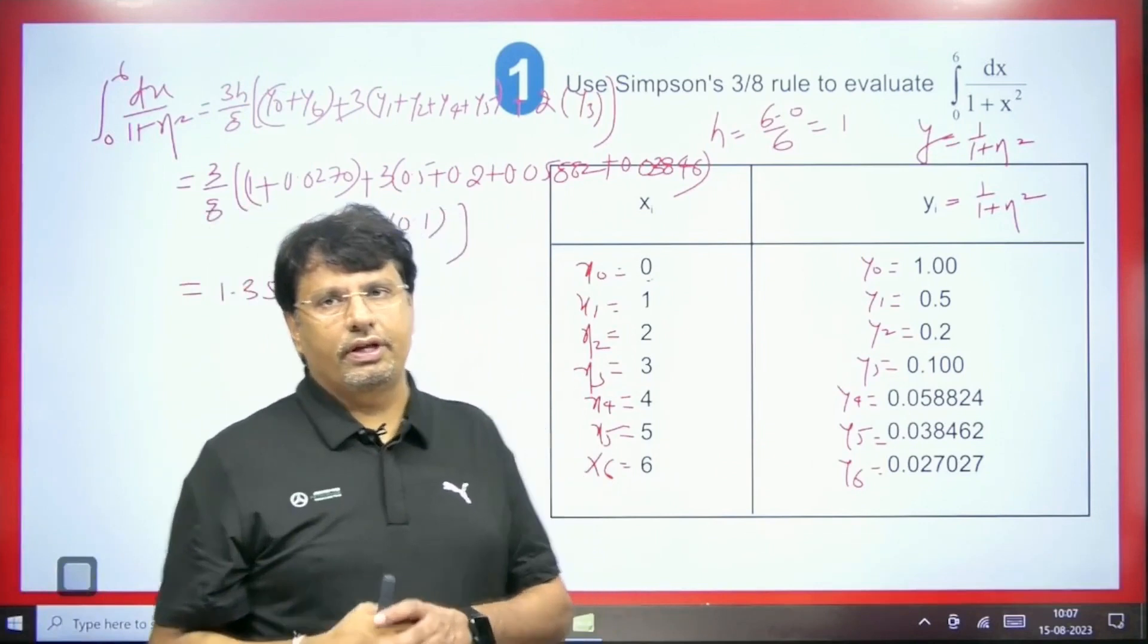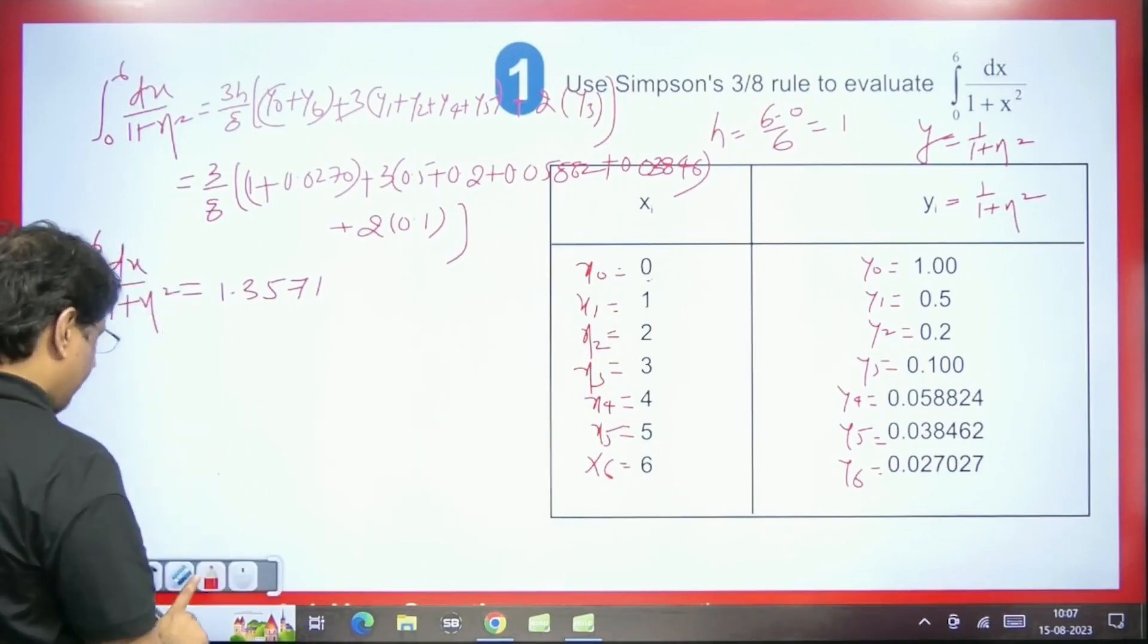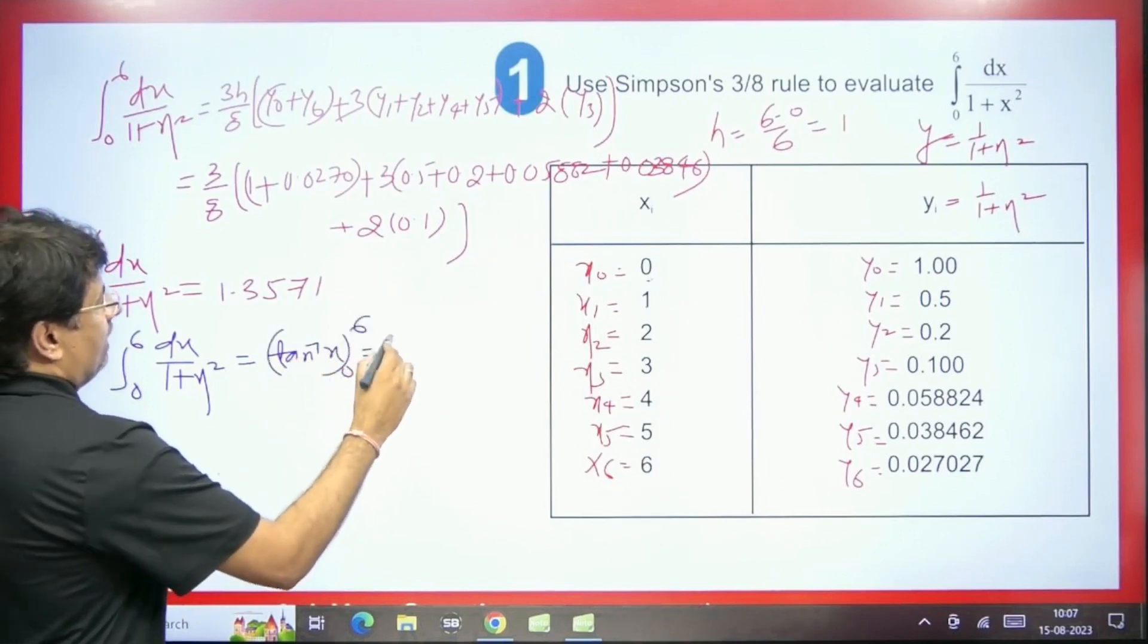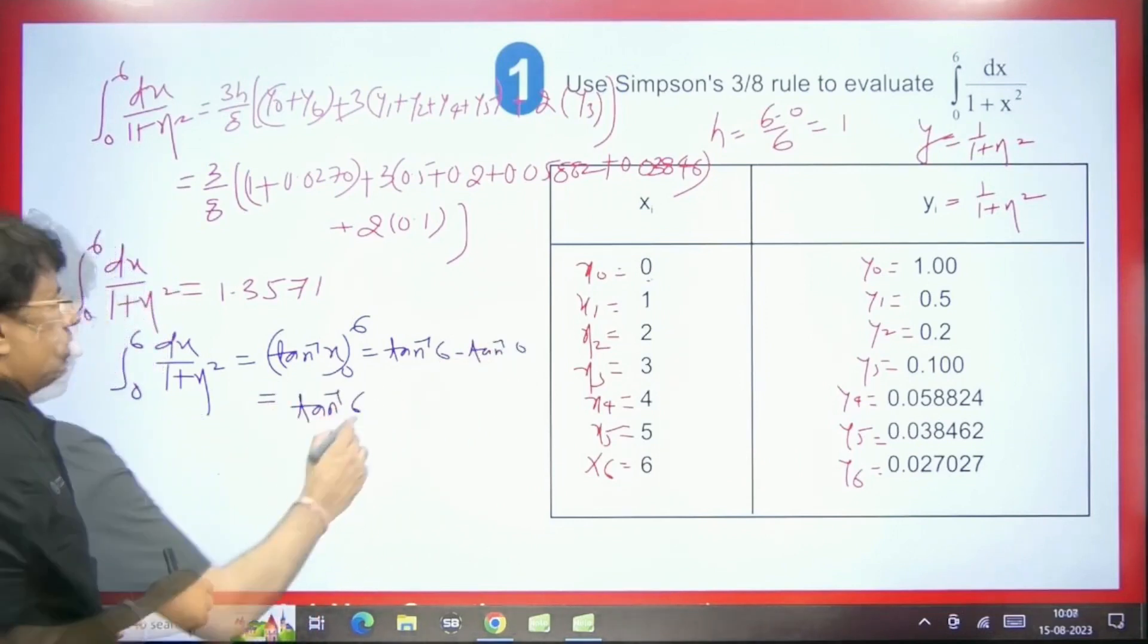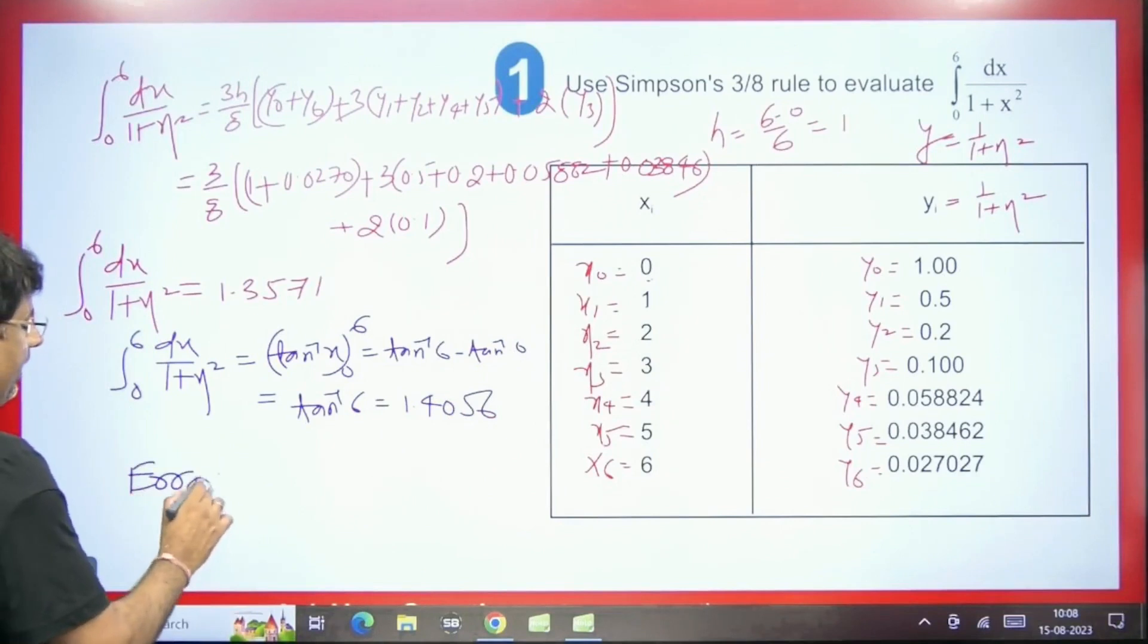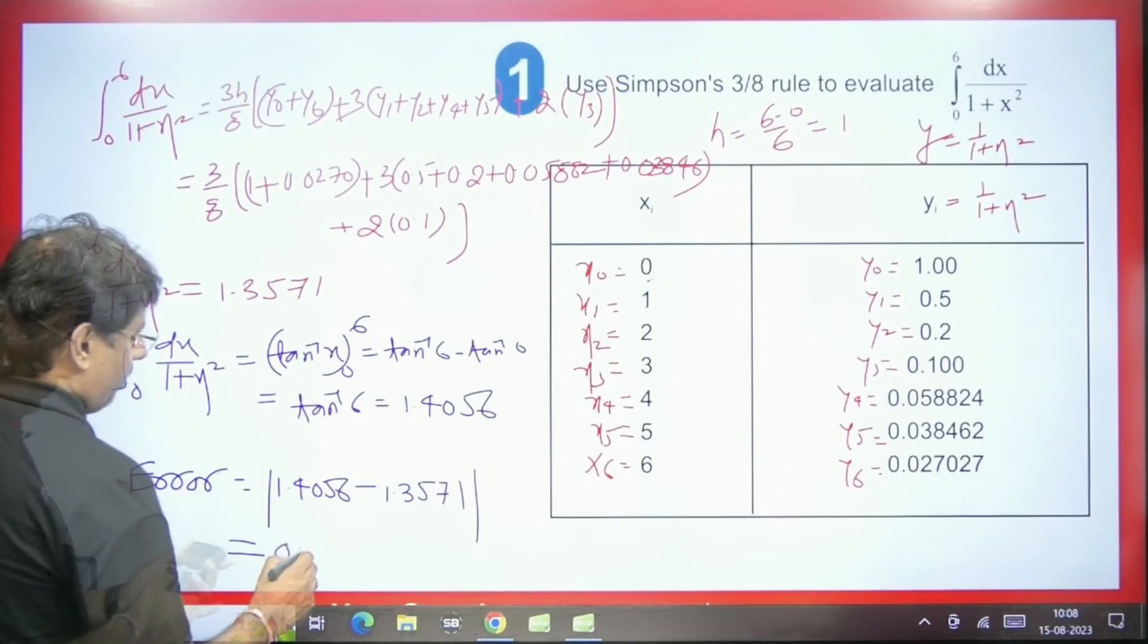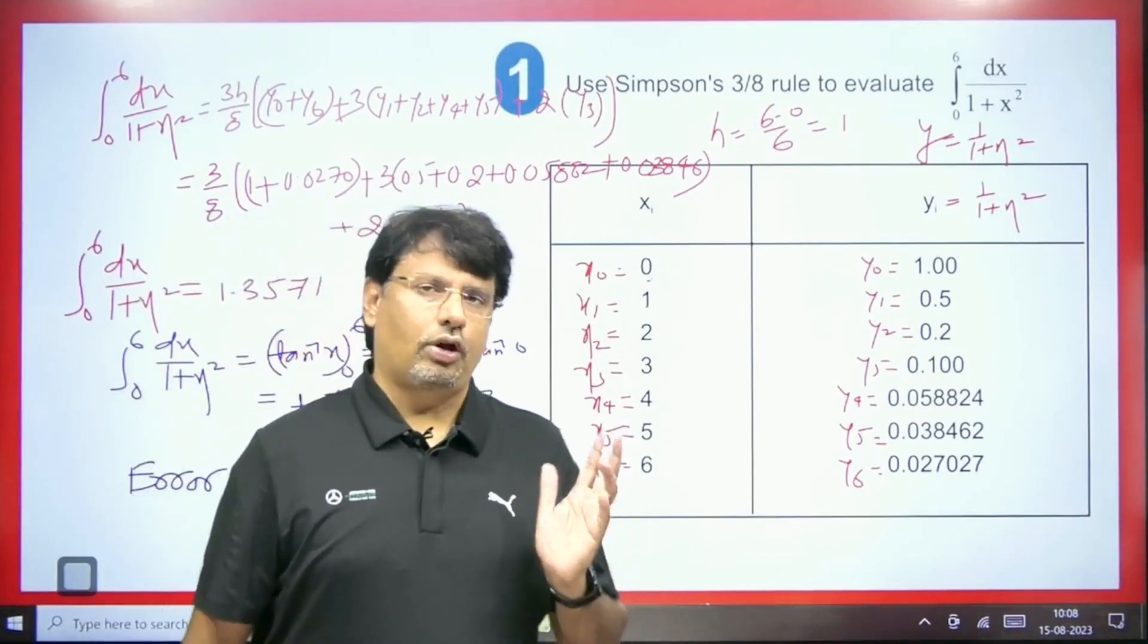Sometimes the exam may ask you about error. So this value we got here will be the approximate value. Now what are we going to do? We will calculate its exact value. If suppose you are asked about the error, then we will do its integration originally. So it will be 1 plus x square. Here we will get tan inverse x, 0 to 6. So from here we will have the value as tan inverse 6 minus tan inverse 0. So here we will get tan inverse 6. So its value will be 1.4056. This is its value. Now sometimes they may ask you about the error. Then what will we do? We will take the exact value that we got here and we will put modulus outside. We will find minus 1.3571. And if we take its modulus here, then the value which we will get will be 0.04854. So this will be the error.